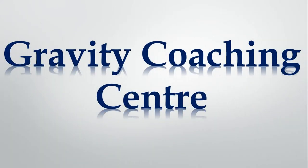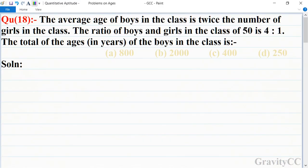Welcome to our channel, Gravity Coaching Center. Chapter: Problems on Ages. Question number 18: The average age of boys in the class is twice the number of girls in the class. The ratio of boys and girls in the class of 50 is 4:1. The total of the ages in years of the boys in the class is which one?